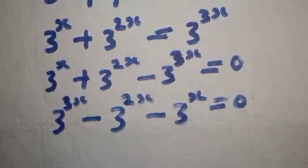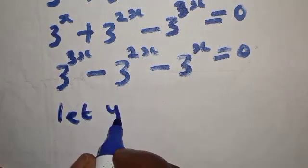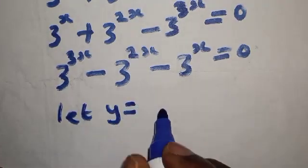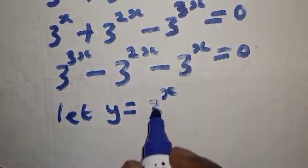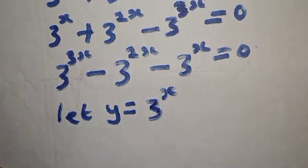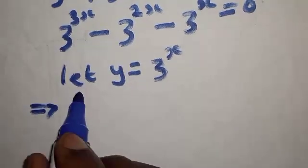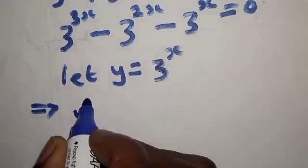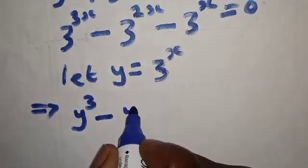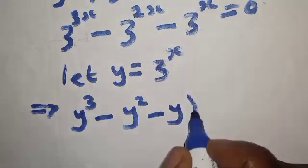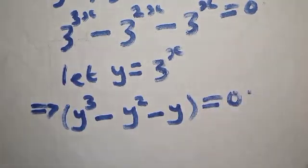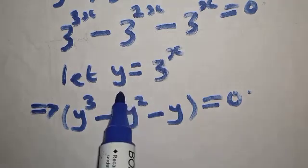The next step is to let y equal to 3 raised to power x. So 3 raised to power 3x equals y cubed, 3 raised to power 2x equals y squared, and 3 raised to power x equals y. Substituting, we get y cubed minus y squared minus y equal to zero.